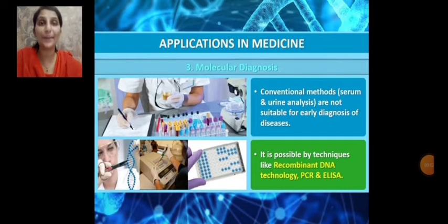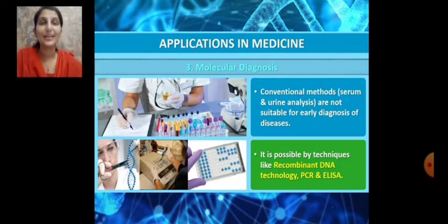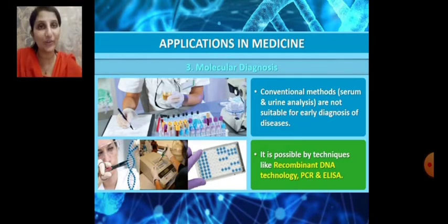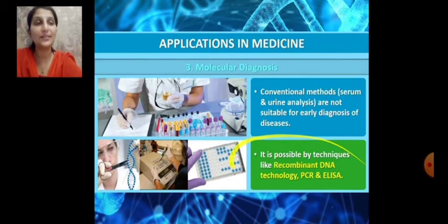Next we are going to learn about the application of medicine in diagnosing diseases, that is molecular diagnosis. The conventional methods of diagnosing a disease usually involve tests like serum tests and urine tests, but these tests will not help in early diagnosis of diseases. Early diagnosis is possible by techniques like PCR (Polymerase Chain Reaction), recombinant technology, and ELISA.